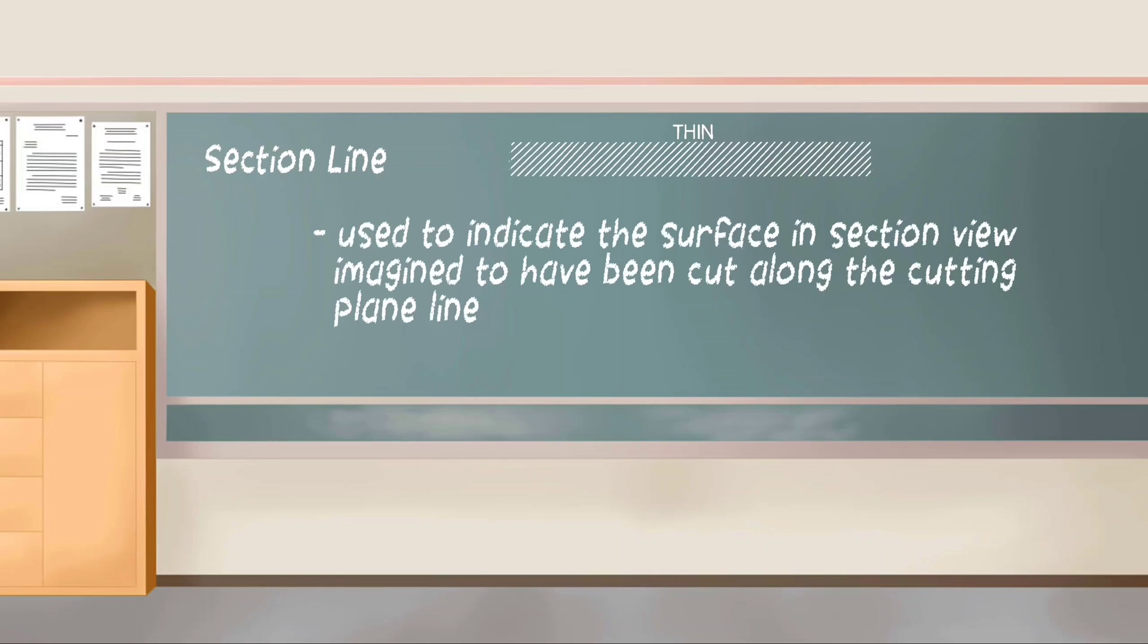Section line. It is a thin line used to indicate the surface in section view imagined to have been cut along the cutting plane line.